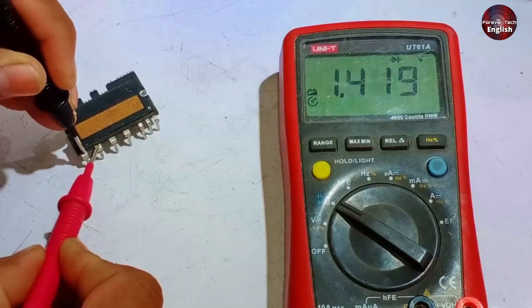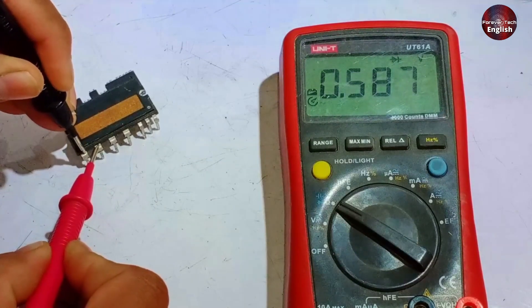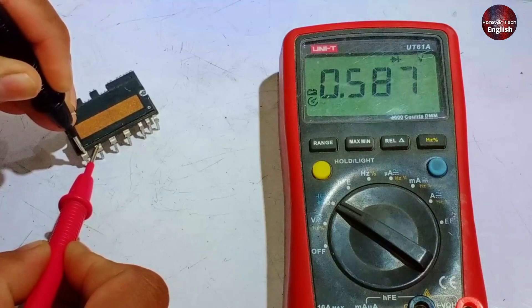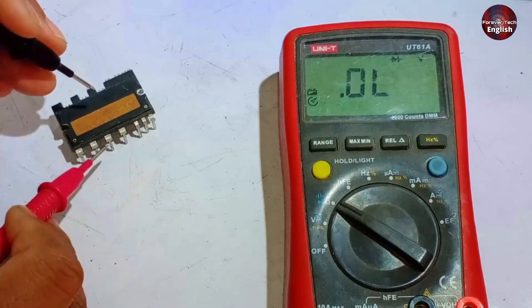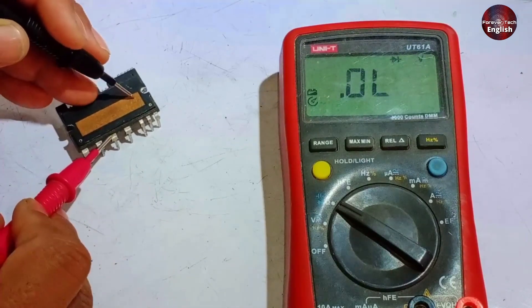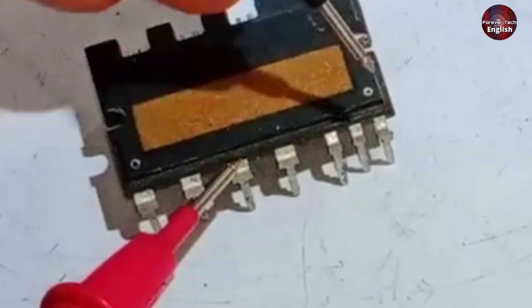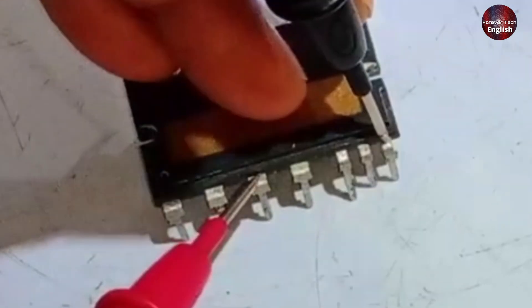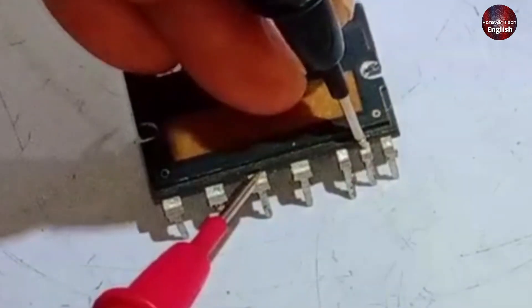Now, when we test pin 27, it should display a value because we are checking across the diode, and that's why we'll get a value here. The next point is pin 25. Connect the positive probe to pin 25, and the next point to pin 21. No value should be displayed here, just like the previous points.